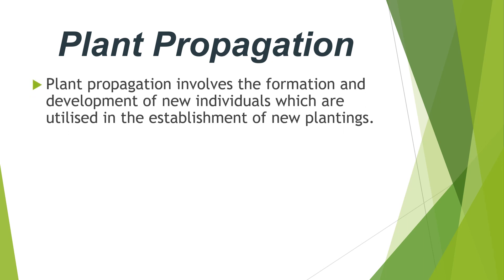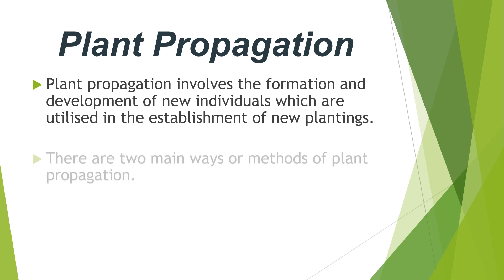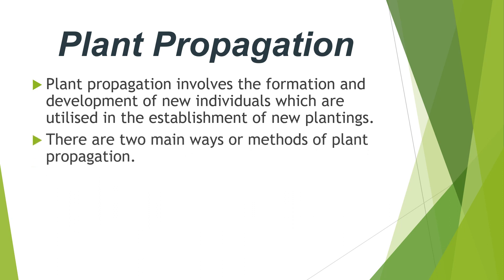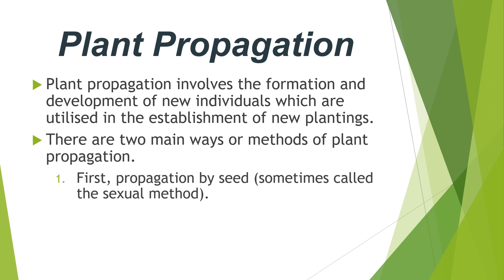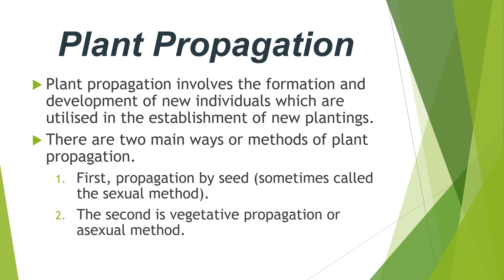Plant propagation involves the formation and development of new individuals which are utilized in the establishment of new plantings. There are two main methods: propagation by seed, sometimes called the sexual method, and the second is vegetative propagation or the asexual method.